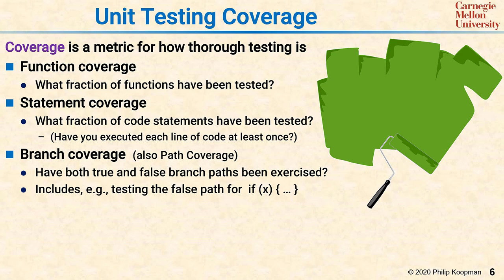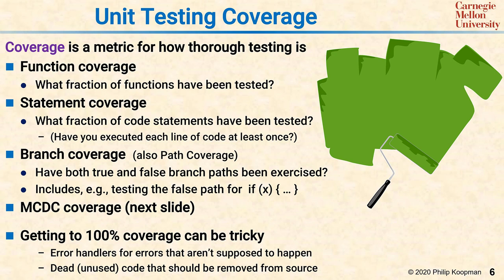An even finer-grained notion of control flow coverage is MCDC coverage, which we'll handle in the next slide. Getting to 100% coverage can be a bit tricky. If you have error handlers for errors that are never supposed to happen, you can't get 100% coverage unless you make that error happen. If you have an error handler you've never actually tested, how do you know it's going to work if that error actually occurs? You need to find some test method to exercise the handler. Another issue with 100% code coverage is dead or unused code — if that code cannot ever be executed, you should probably take it out.